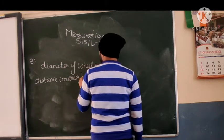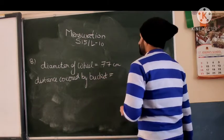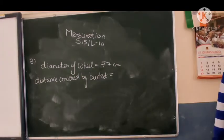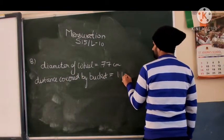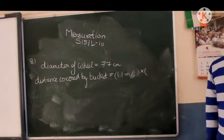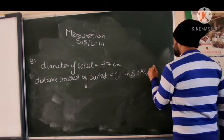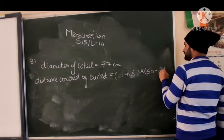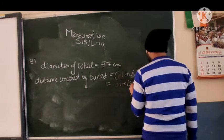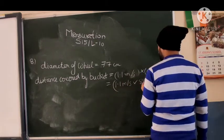Distance covered by bucket is equal to speed into time. What is the speed here? 1.1 meter per second. Time is 1 minute 28 seconds, that means 60 plus 28. That means 1.1 meter per second into 60 plus 28 seconds.